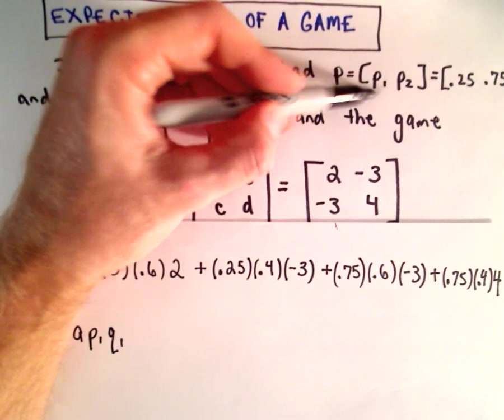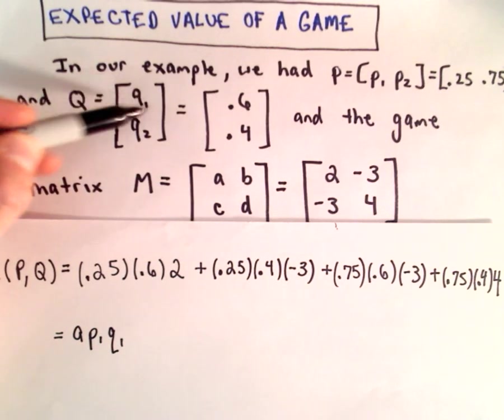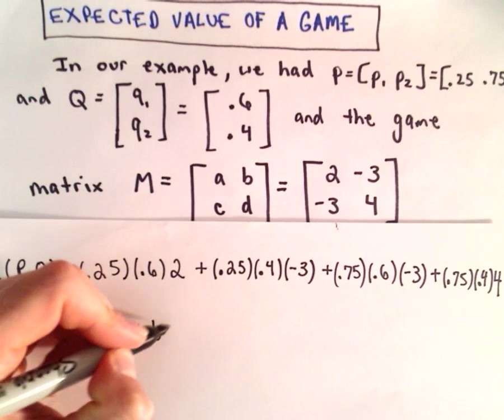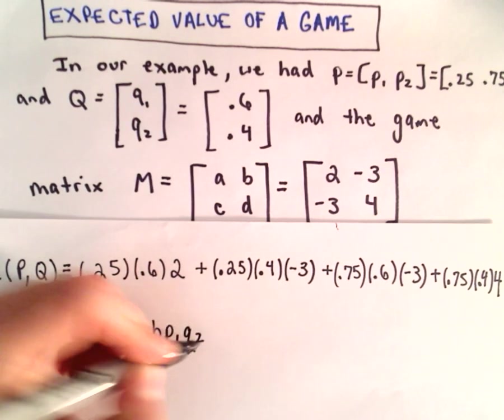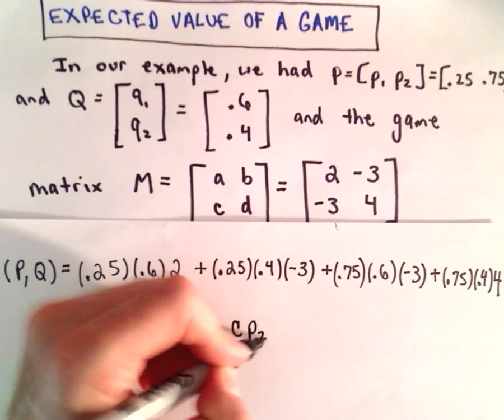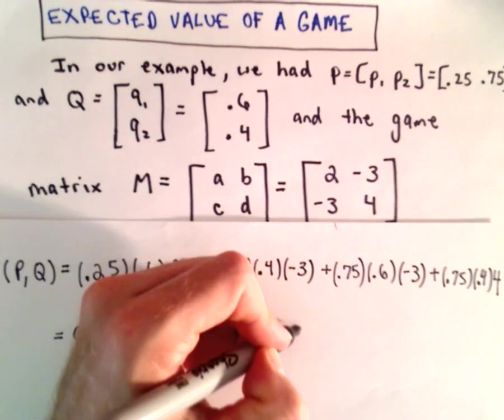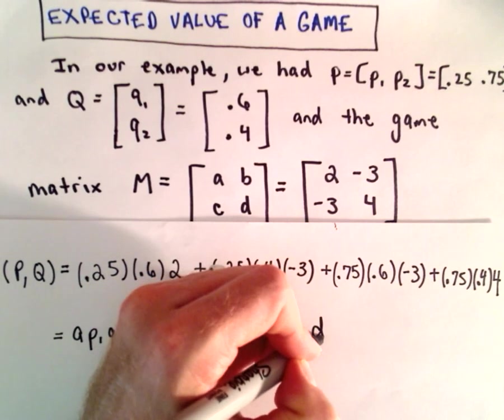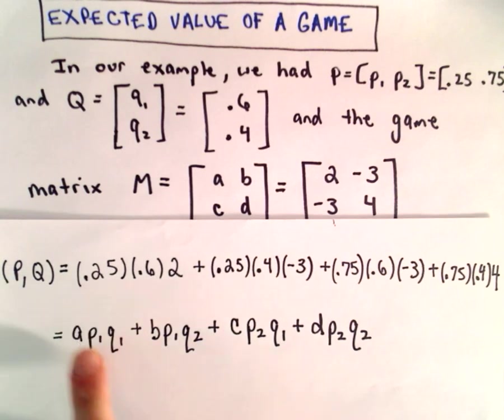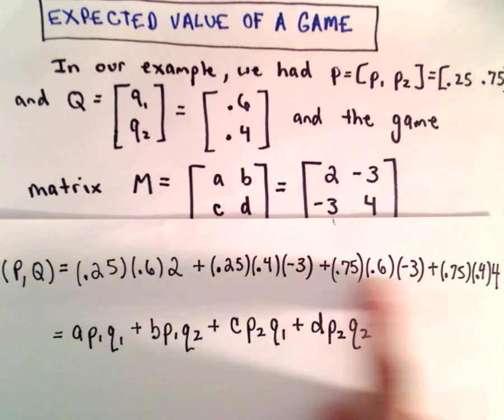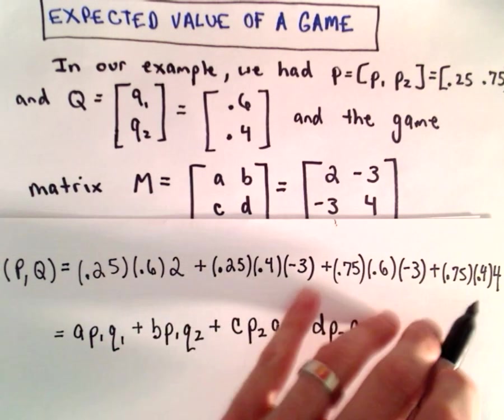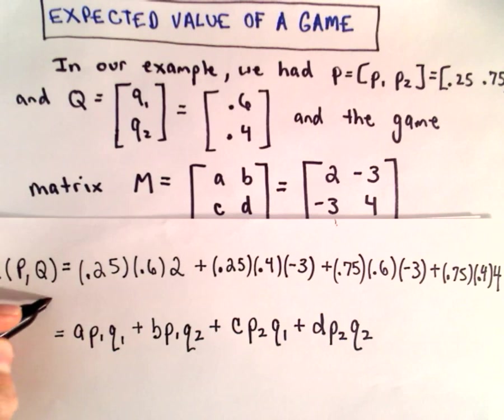You can check more generically if we label this. What we're doing is we're getting A times P1 times Q1 using our first entry for A. We're just using the probability of the first row and the probability of the first column. So on and so forth. We'd have B times P1 times Q2 plus C times P2 and Q1. And then we'll have D times P2 and Q2. So just kind of writing a more generic formula for what we computed above here.